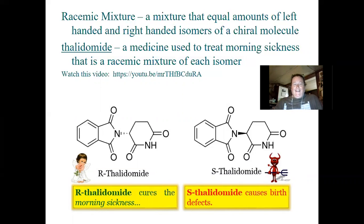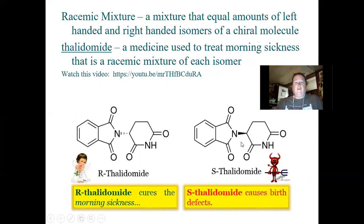The left-handed version of thalidomide causes severe birth defects, and millions of babies were either miscarried or were born with birth defects. The right-handed version of thalidomide cures morning sickness.